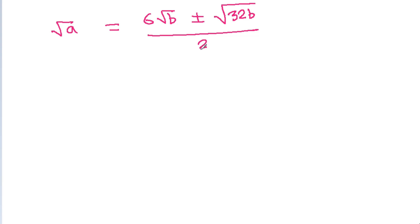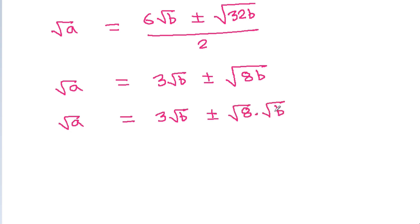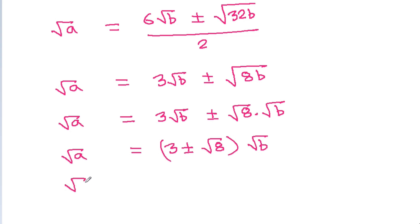Dividing by 2 we get root a equals 3 root b plus or minus root 8 times root b. So root a by root b equals 3 plus or minus root 8.